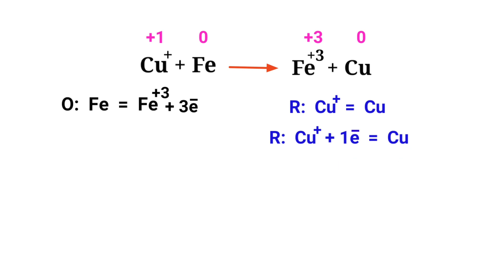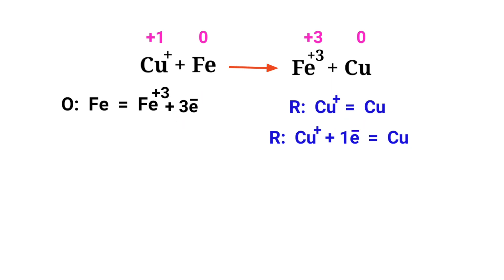The electrons lost in the oxidation half reaction must equal the electrons gained in the reduction half reaction. In the oxidation half reaction there are 3 electrons, but in the reduction half reaction there is only 1 electron. To equalize the number of electrons in the 2 half reactions, multiply the reduction half reaction by a coefficient of 3.